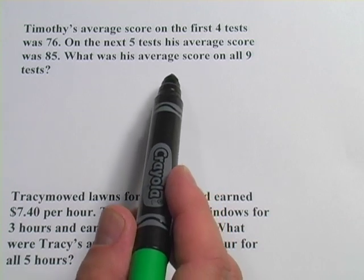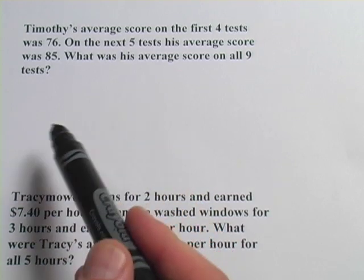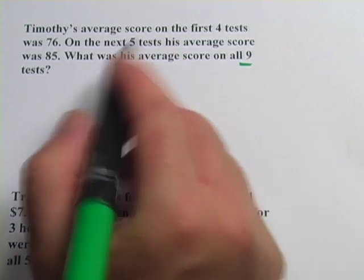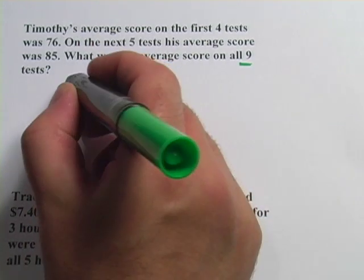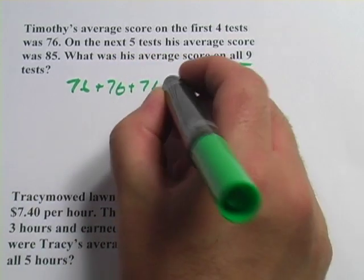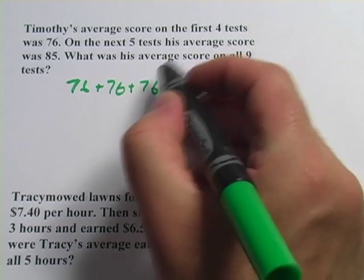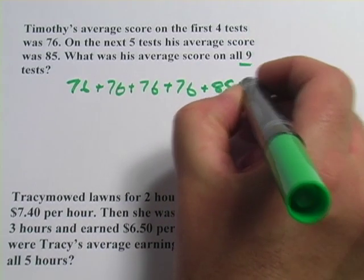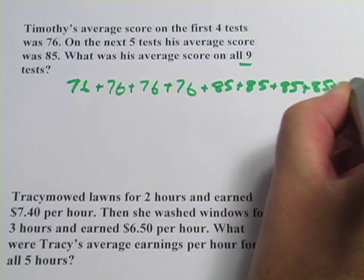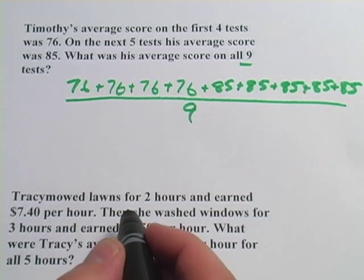To figure out an average, you usually add up all the numbers and then divide by the number of numbers that you have. In this case, he's got nine tests. So we could write 76 plus 76 plus 76 plus 76, and then plus 85 plus 85 plus 85 plus 85 plus 85, and divide that all by nine. And that works.